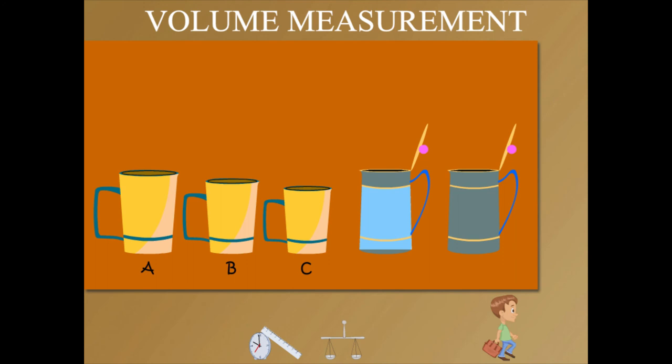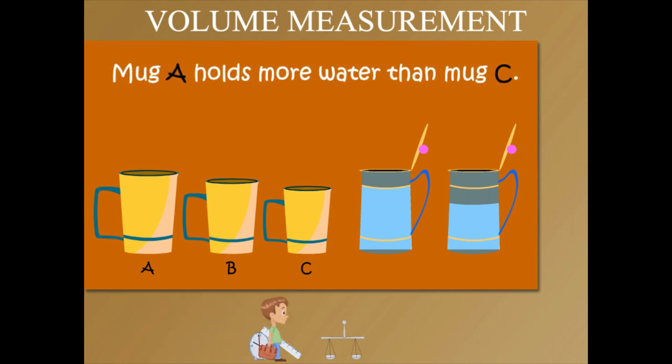Pour out water using A into the jug. Now, pour water from mug C into the jug.